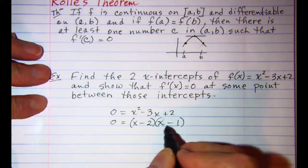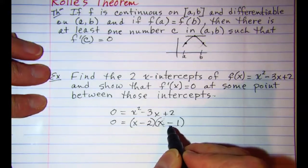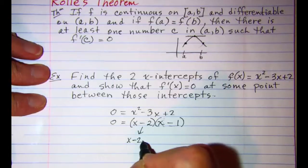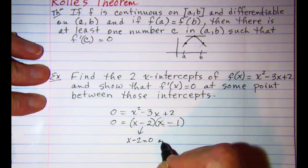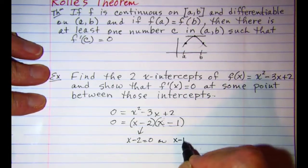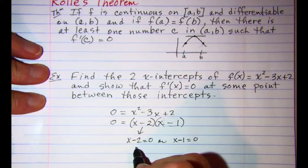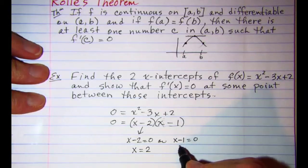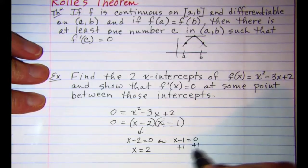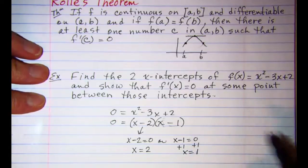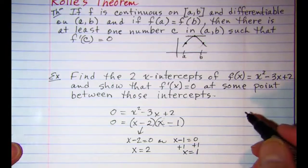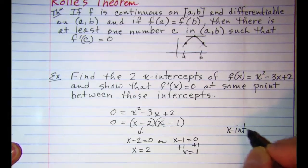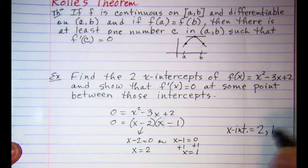So if two factors multiply together to give me 0 then one of them equals 0 or the other equals 0. Add 2 to both sides for this one we get x is equal to 2 and add 1 to both sides for this one we get x is equal to 1. So my two intercepts are 2 and 1.